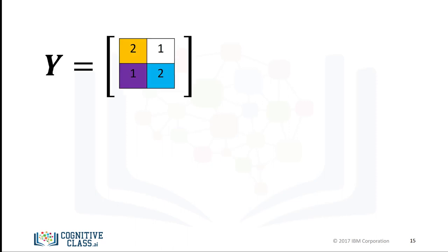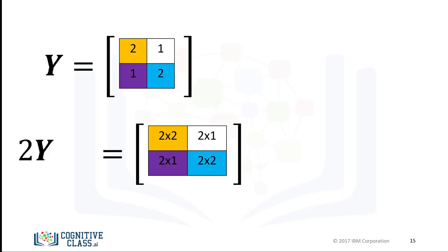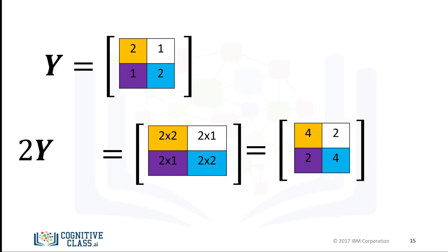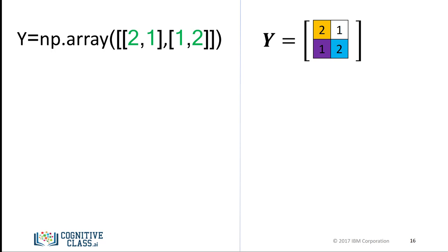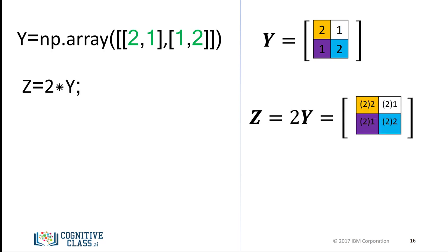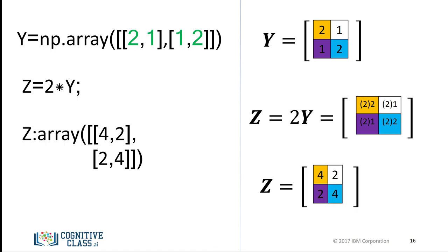Multiplying a NumPy array by a scalar is identical to multiplying a matrix by a scalar. Consider the matrix y. If we multiply the matrix by the scalar 2, we simply multiply every element in the matrix by 2. The result is a new matrix of the same size where each element is multiplied by 2. We first define the array y, then multiply the array by a scalar and assign it to the variable z. The result is a new array where each element is multiplied by 2.